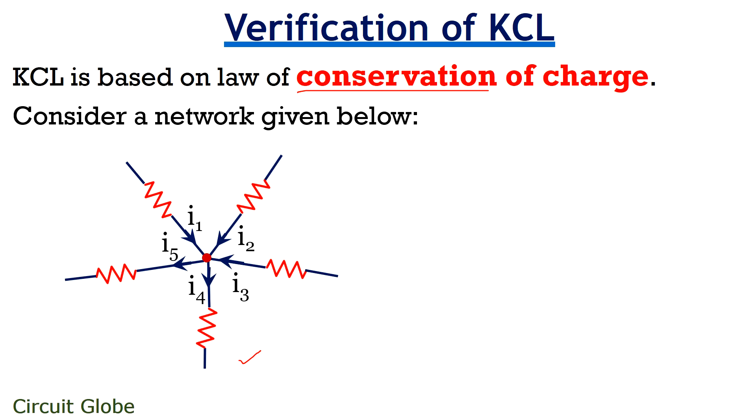And each branch is having a current which is either entering or leaving the junction. So according to KCL, the summation of all the current at the junction must be zero. For this particular circuit, this is our junction.